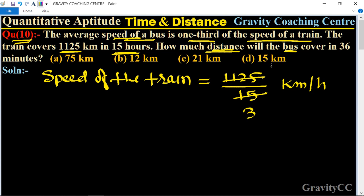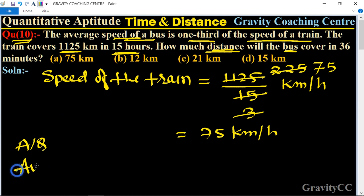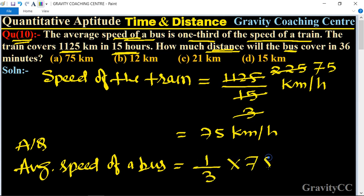One-third of the train, dividing by table of 3, is equal to 75 kilometers per hour. According to the question, average speed of a bus is equal to one-third of speed of the train, which is 75 divided by 3.